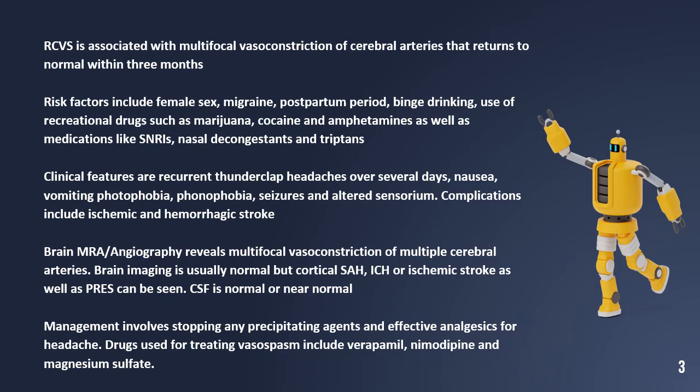Brain MRA/angiography reveals multifocal vasoconstriction of multiple cerebral arteries. Brain imaging is usually normal, but cortical subarachnoid hemorrhage, intracerebral hemorrhage, ischemic strokes, as well as PRES can be seen. CSF is normal or near normal.